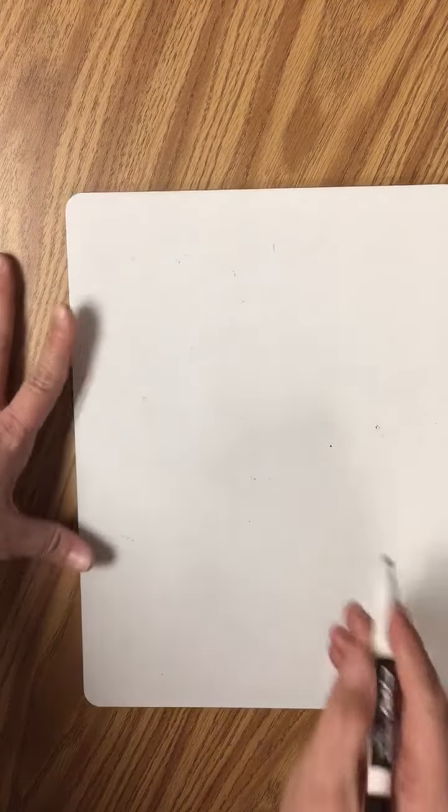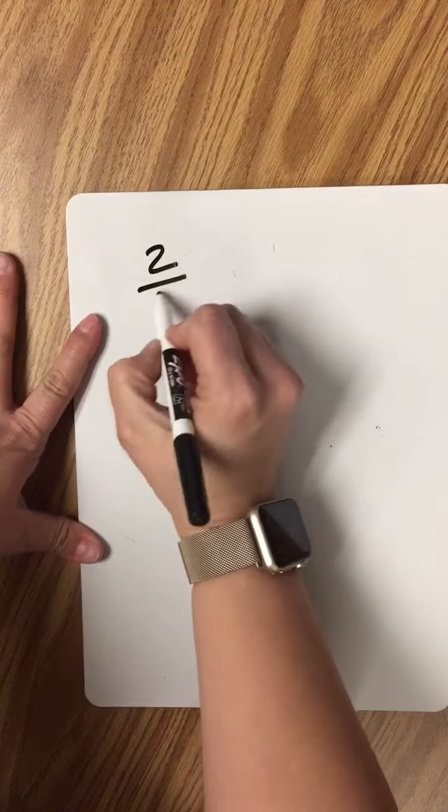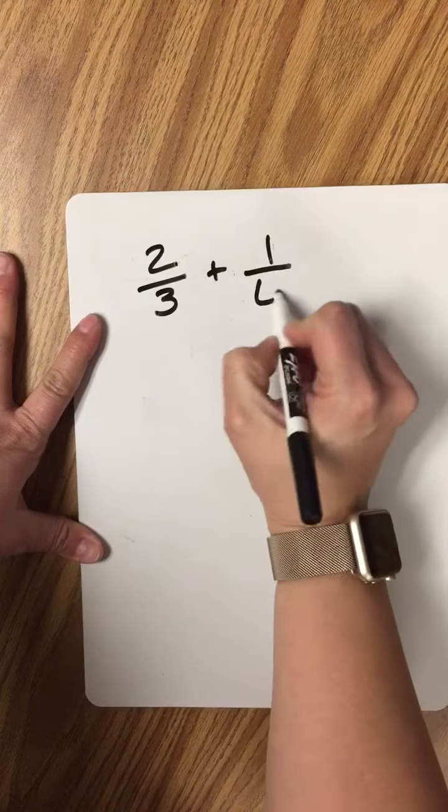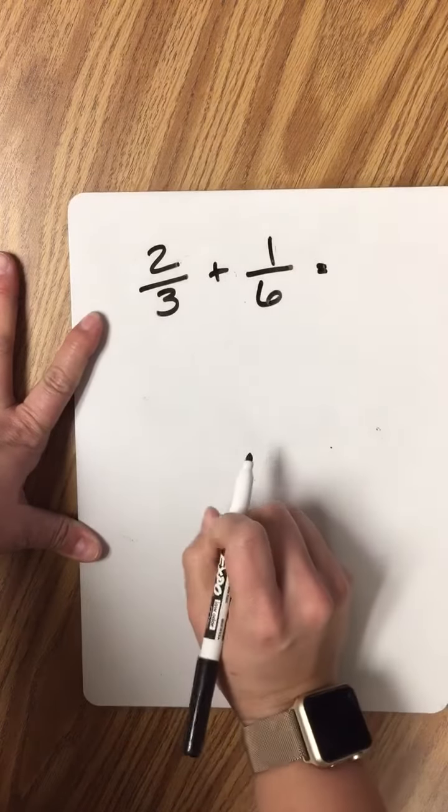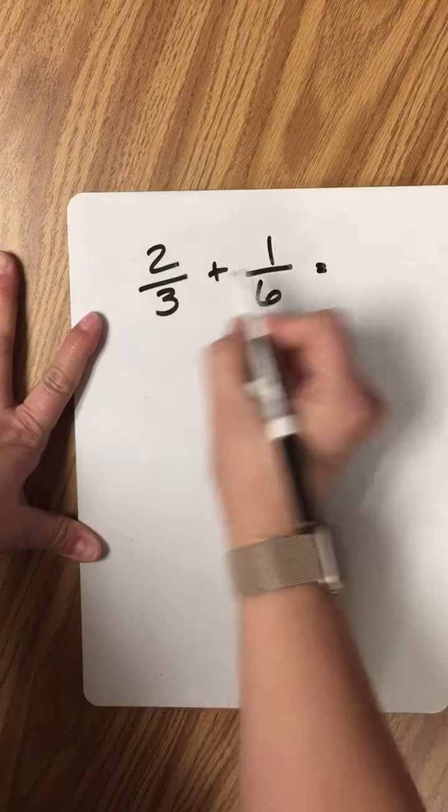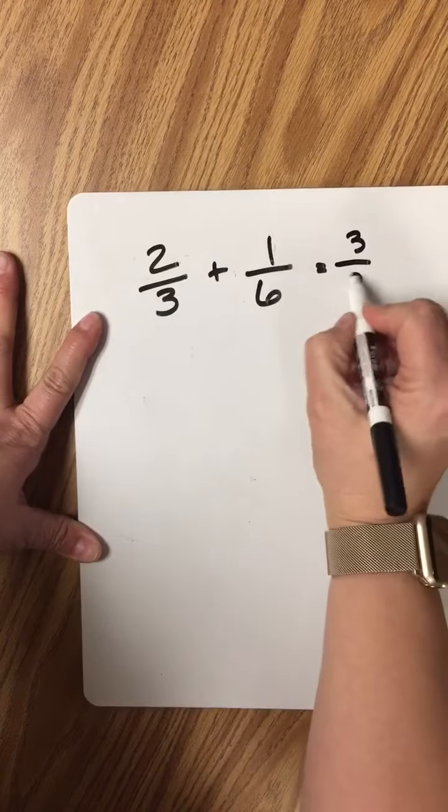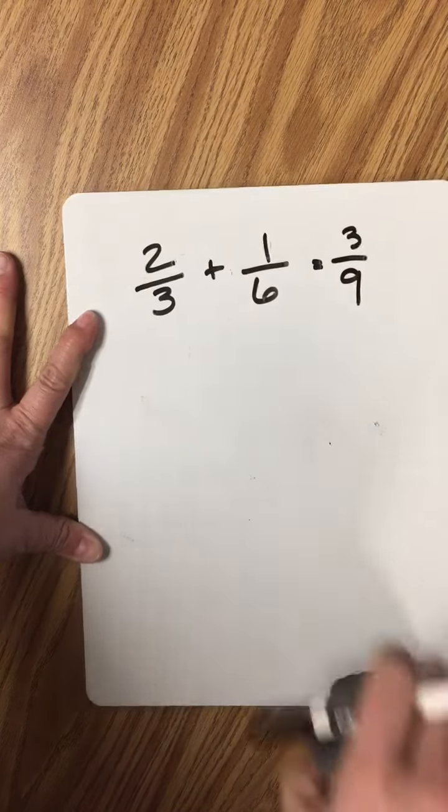The two fractions that I'm going to add are 2 thirds plus 1 sixth. Now in fractions, you can't just add straight across. What I mean is, you can't say 2 plus 1 equals 3, and 3 plus 6 equals 9. That just doesn't work.